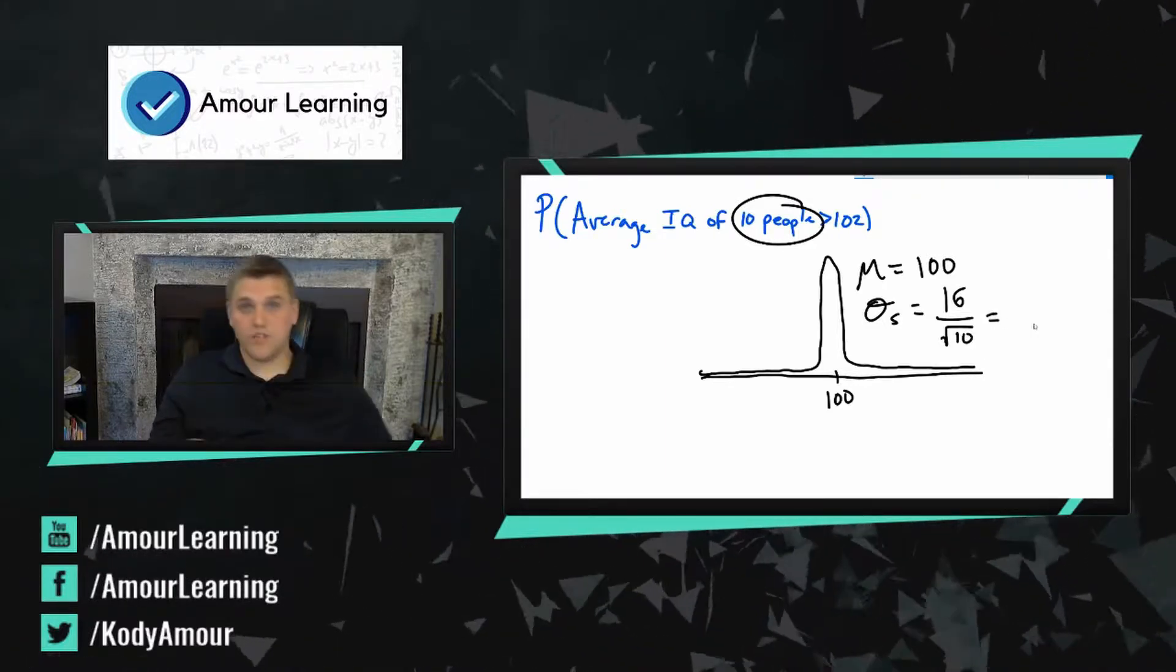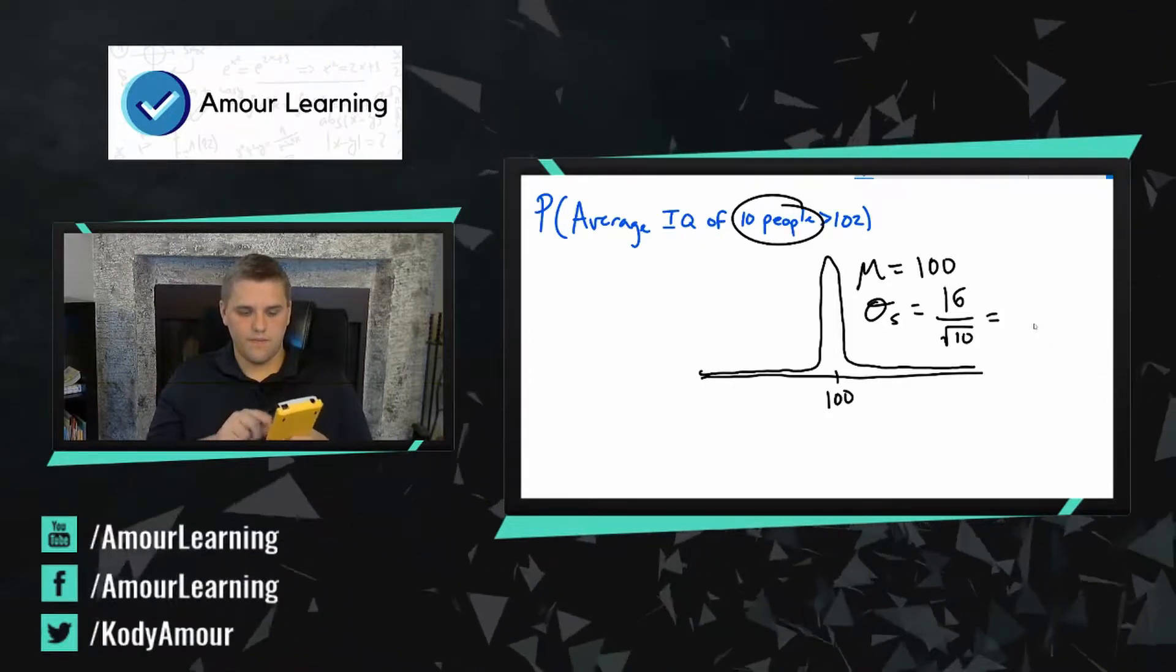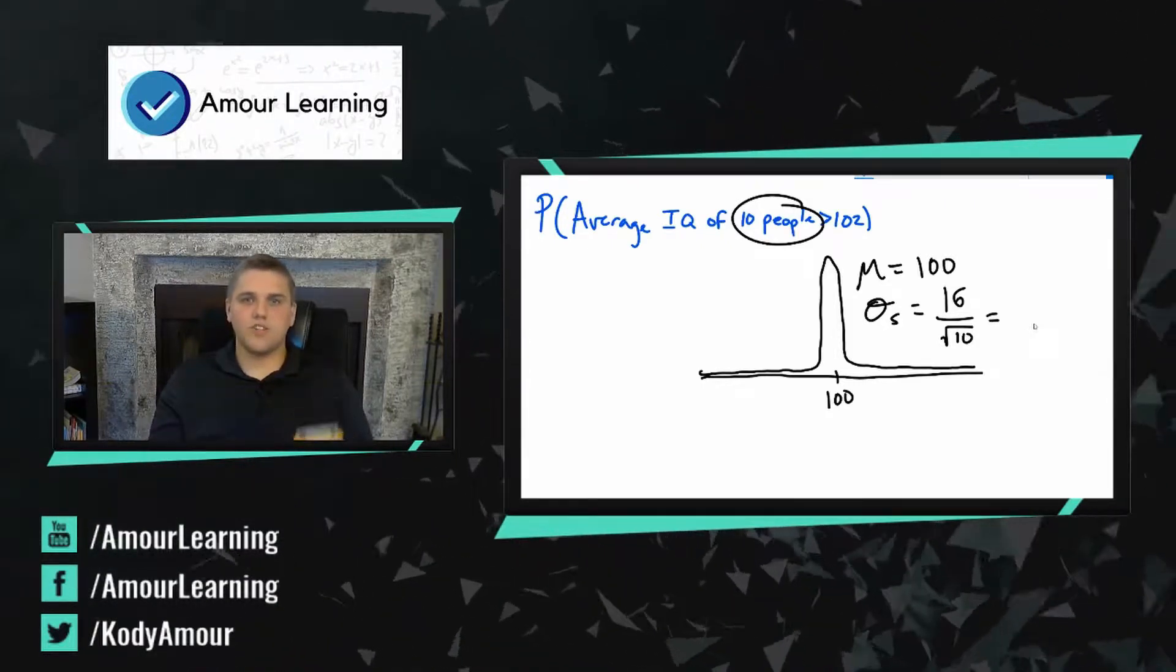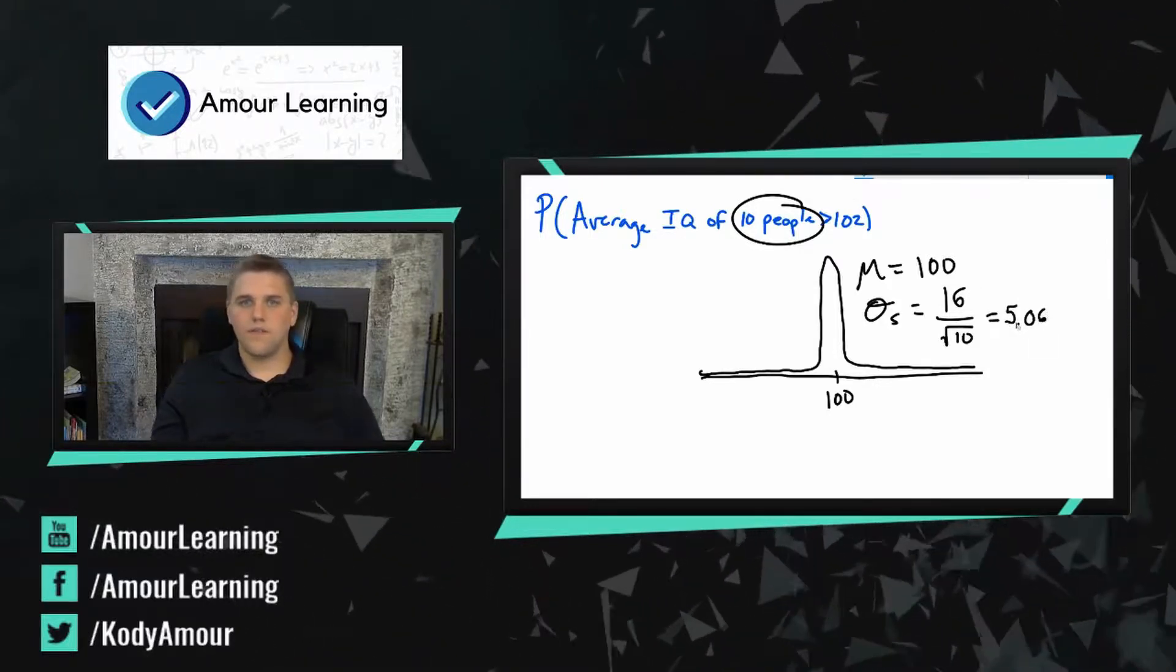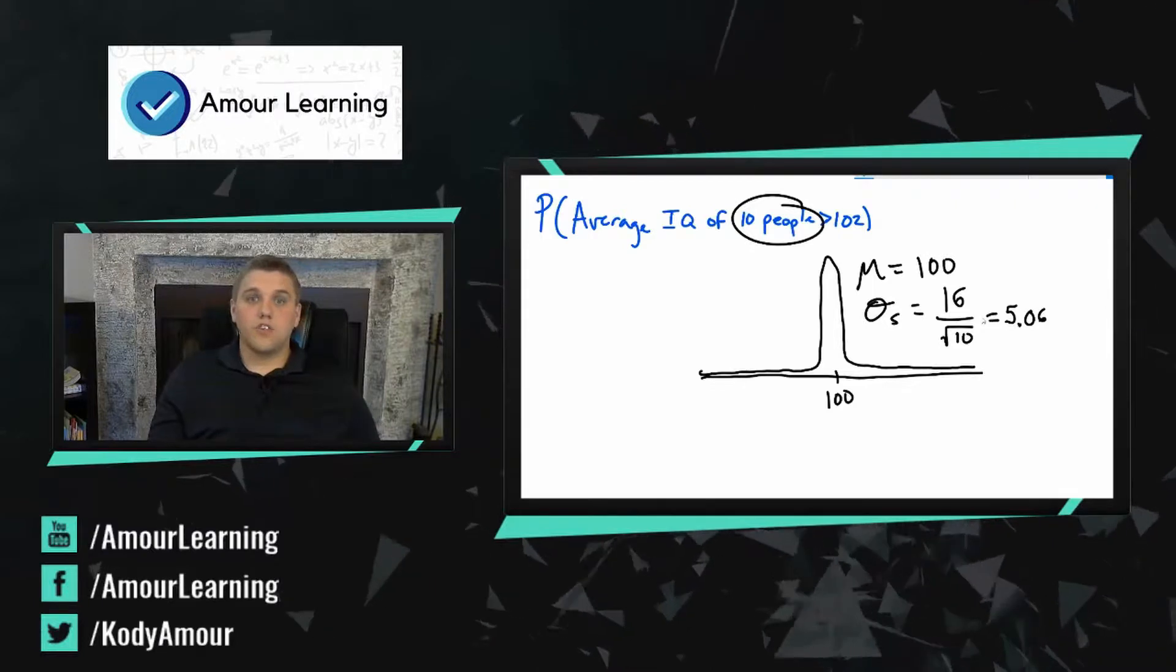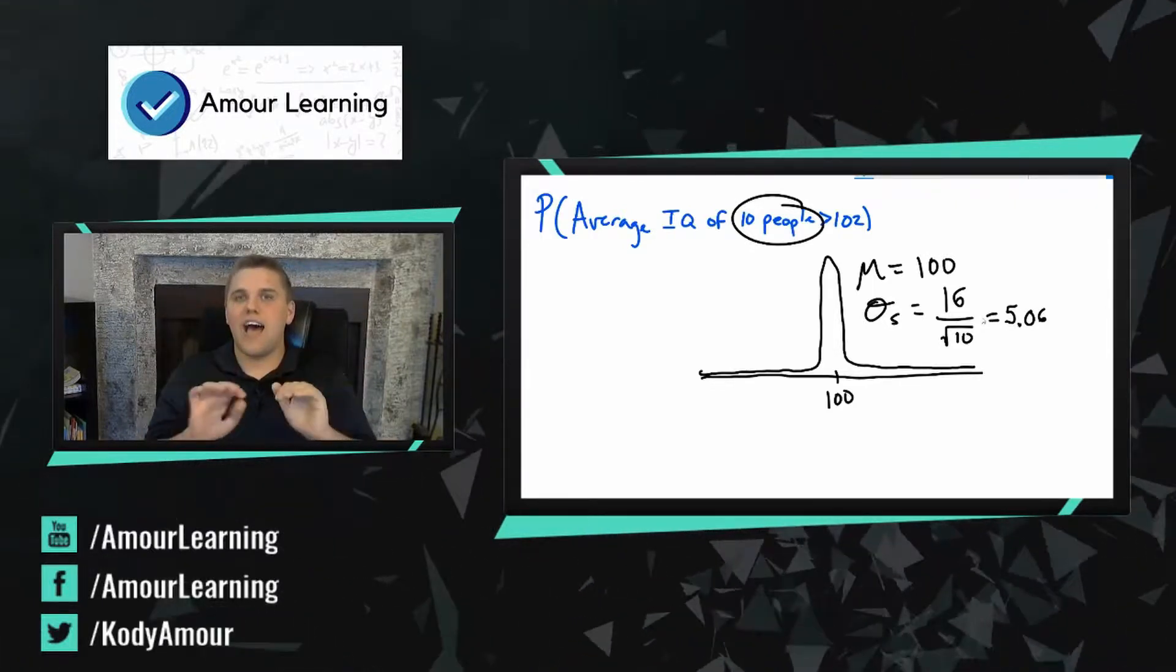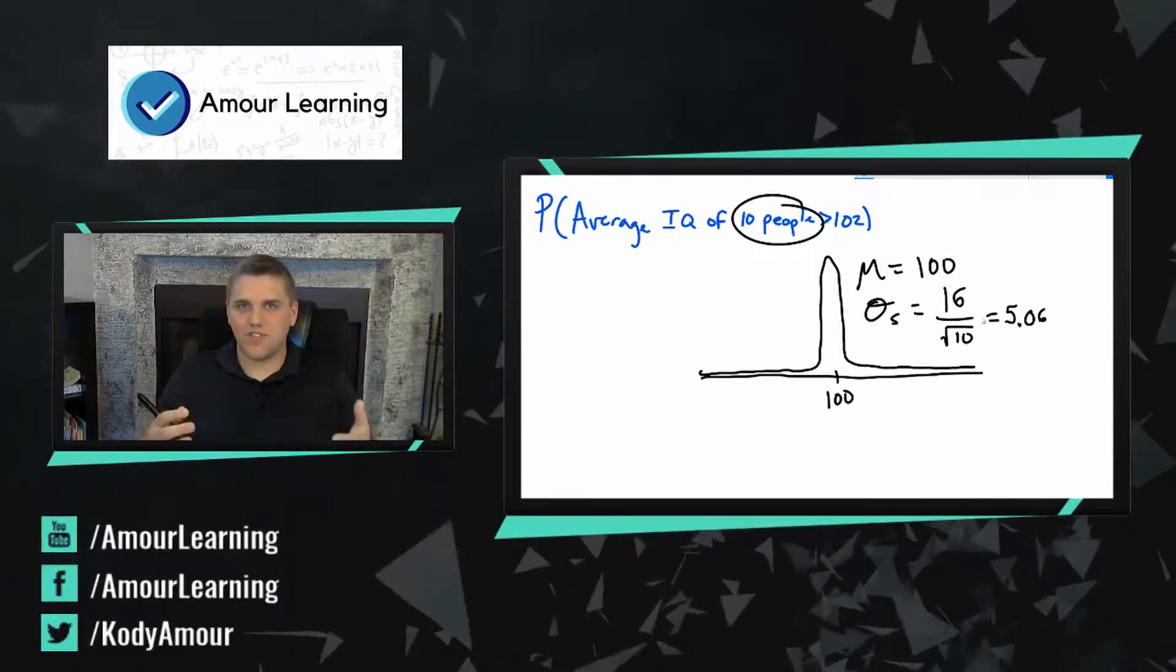So 16 divided by the square root of 10 is 5.06, so that means that this data is not as spread out as the last bell curve, the IQ bell curve which has a standard deviation of 16.